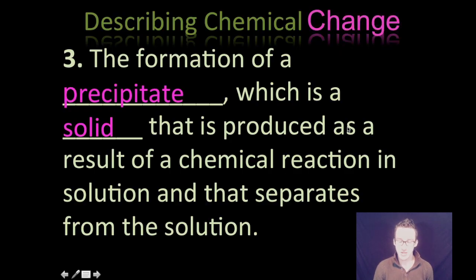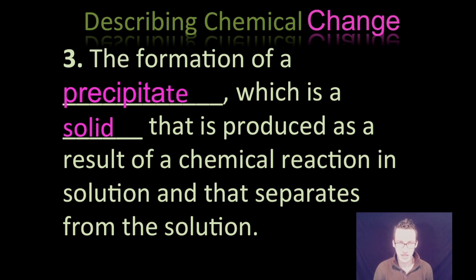Third thing we're to look for to let us know we've got a chemical change is the formation of what's called a precipitate, which is a really fancy chemistry name for a solid that is produced as a result of a chemical reaction in solution and that separates from the solution. So we're looking for the formation of a solid.